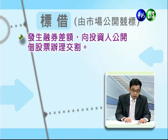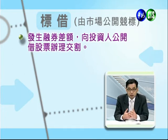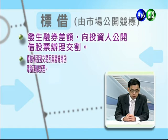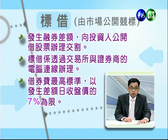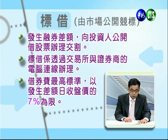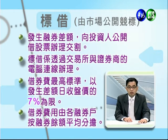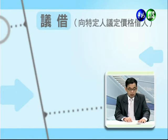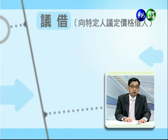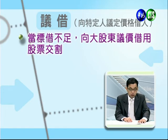在融券余额大于融资余额的情况下，需要办理交割。第一个方法叫做标借：由市场公开竞标，向投资人公开征求股票办理交割，透过交易所与证券商的电脑连线来办理。标借的会费最高标准以发生差额当天收盘价的7%为限，由各融券户按融资余额来平均分摊。